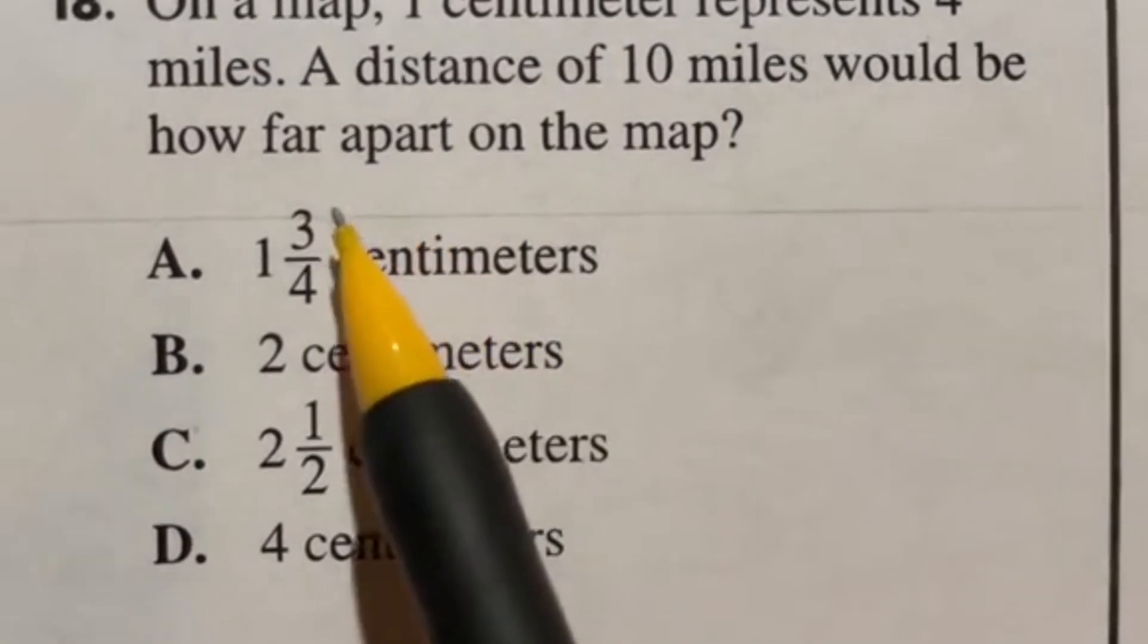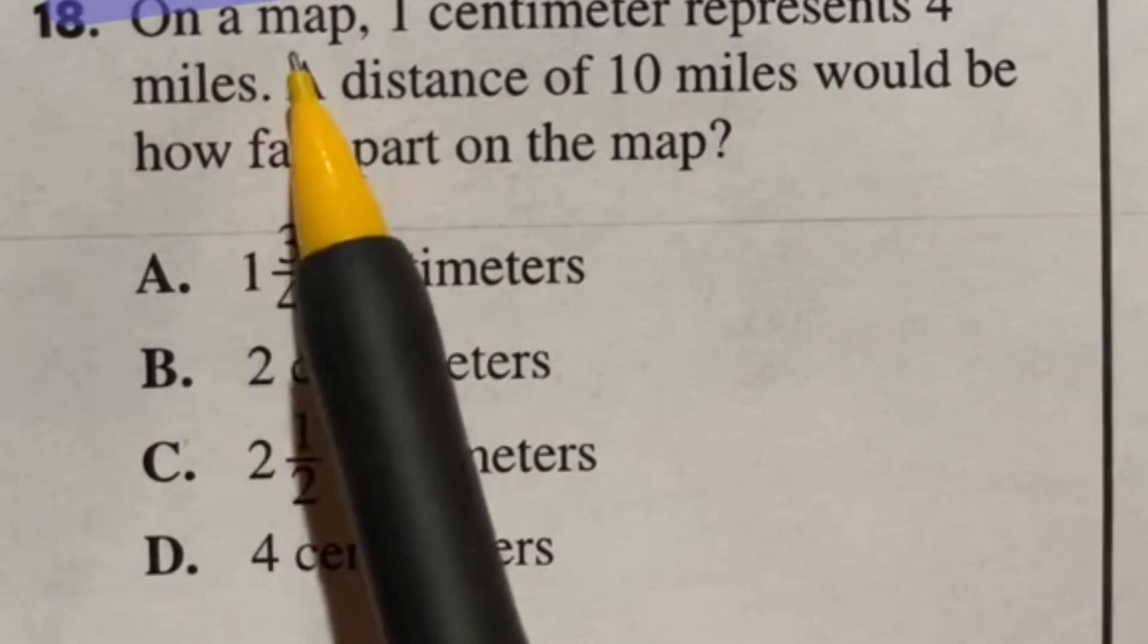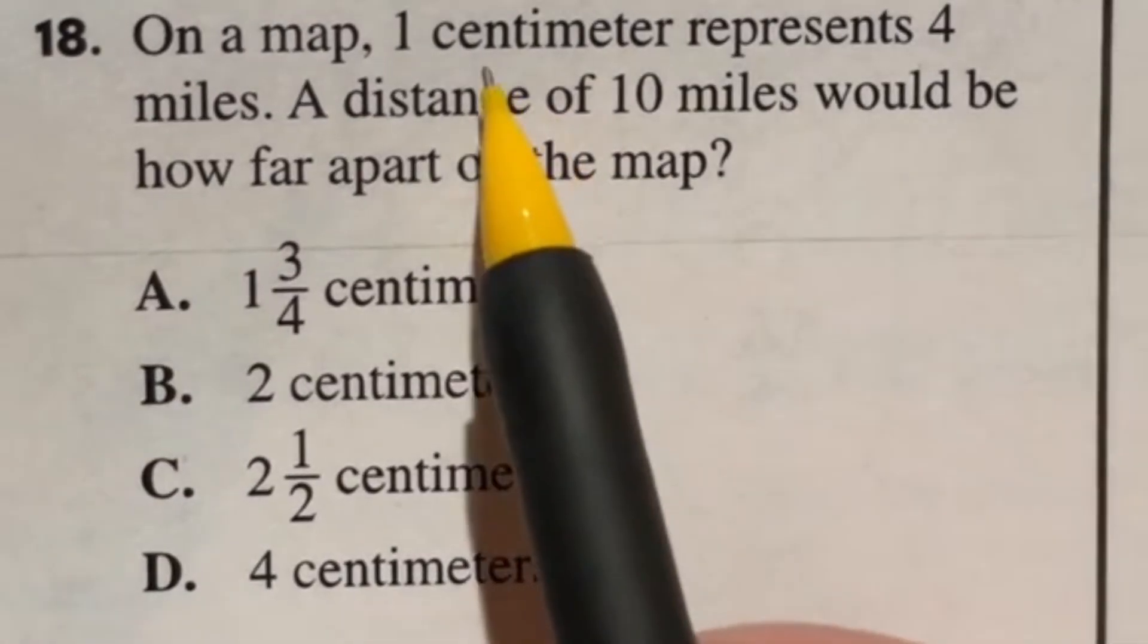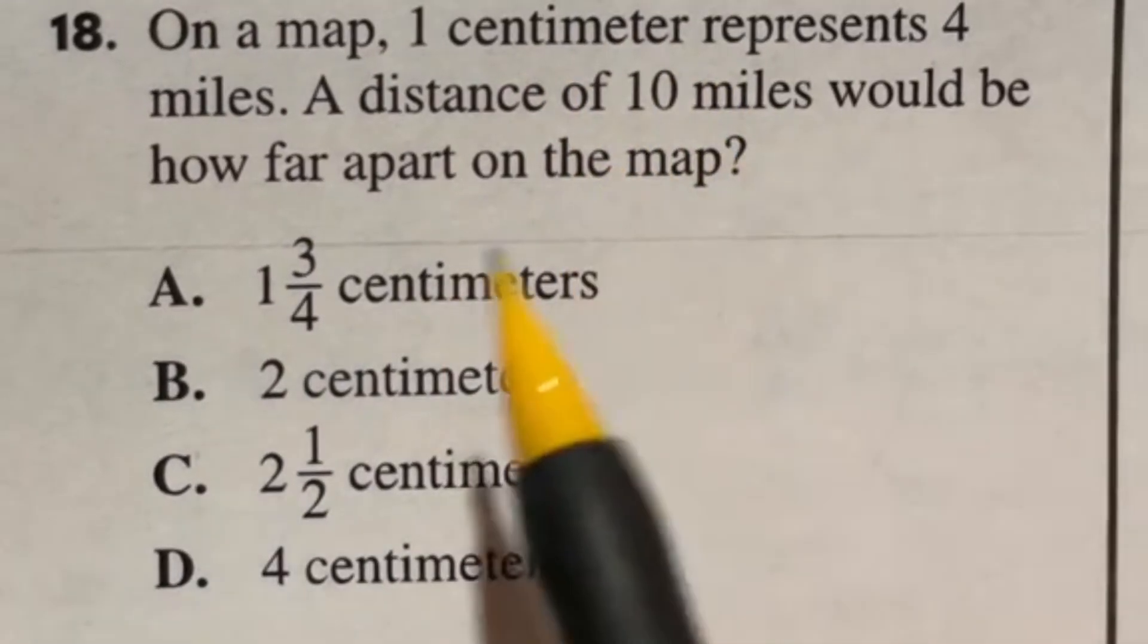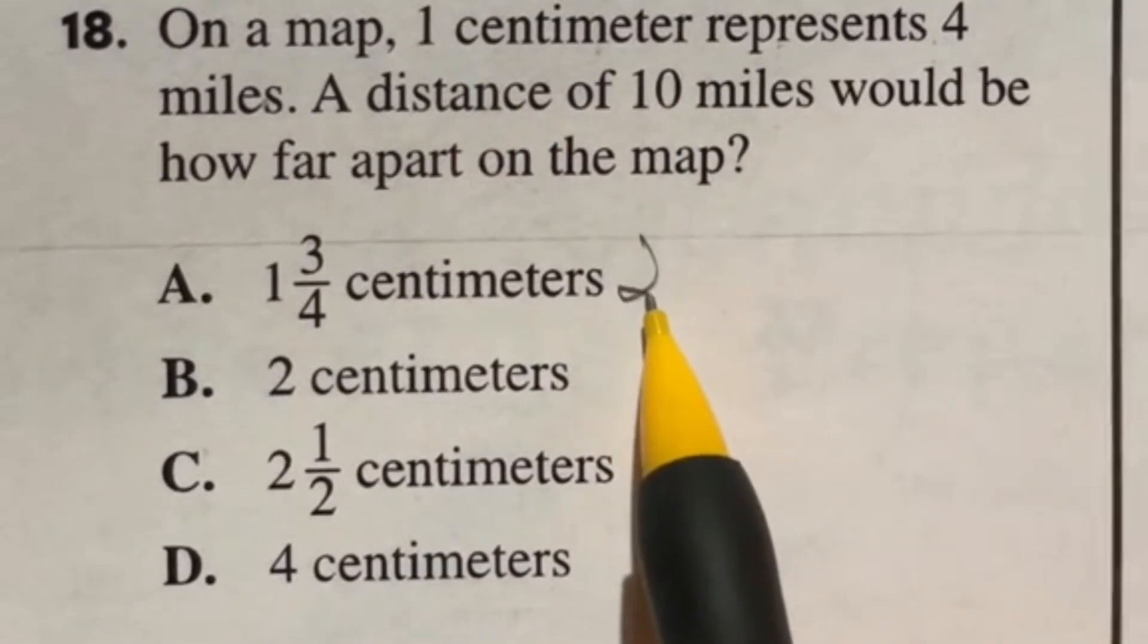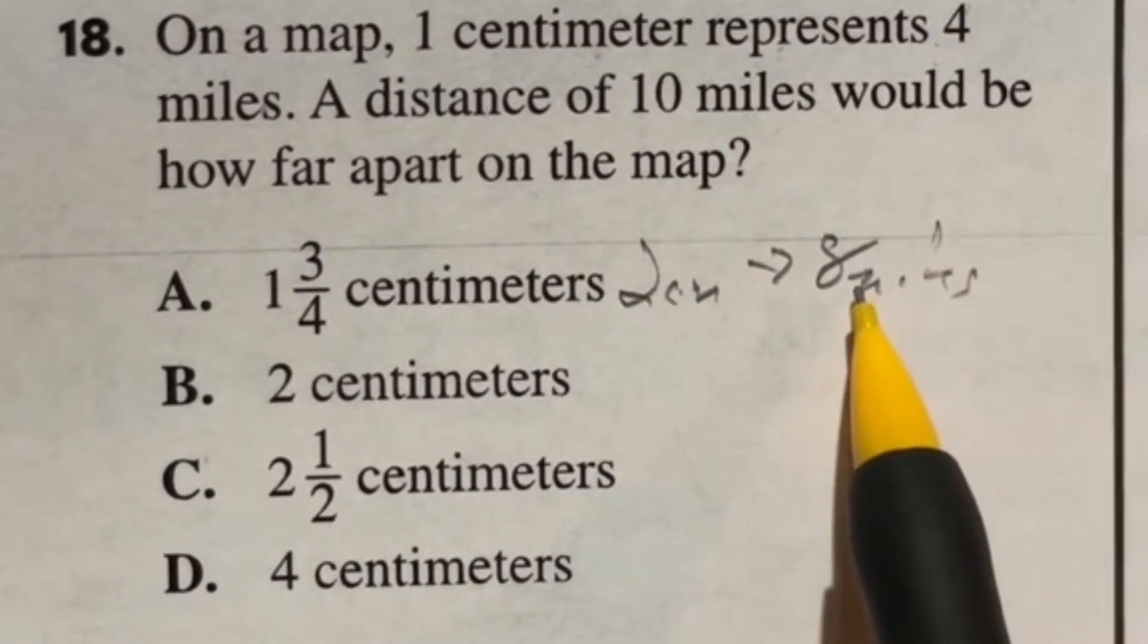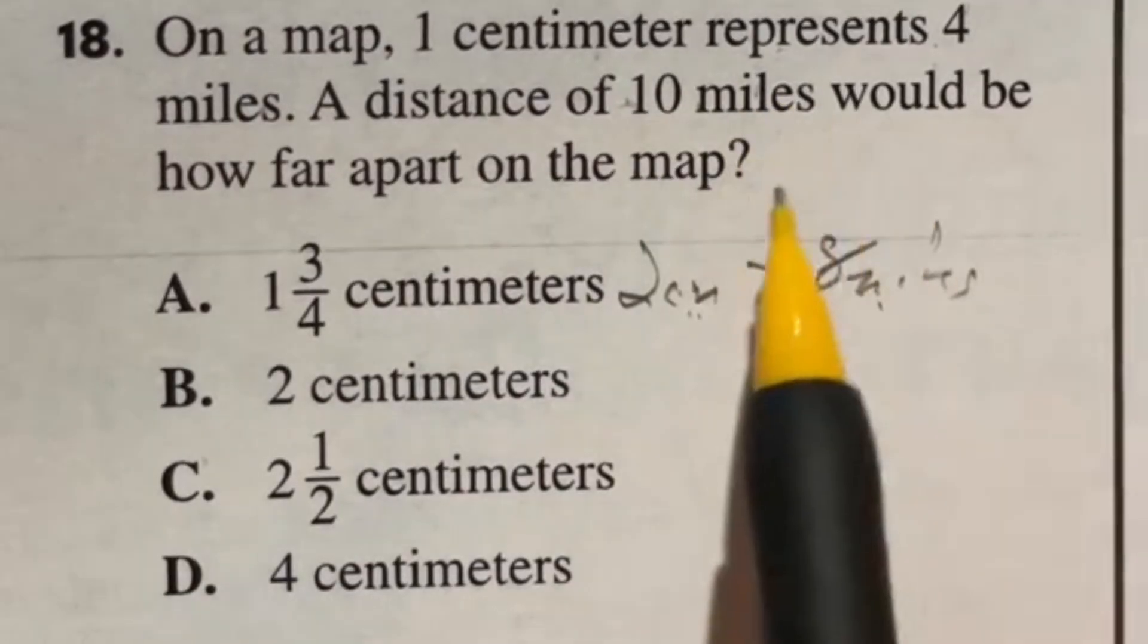Number 18 is an easy one. It says on a map, one centimeter represents four miles, a distance of 10 miles would be how far apart on the map. So this is essentially just figuring out like a ratios game. Now you could do it directly doing all the mathematical things. But let's just use some logical reasoning here. Okay. So one centimeter represents four miles. So that means that two centimeters would represent eight miles. How? Because well, one times two gives us the two and four times two gives us the eight. So right off the bat, I know that it's going to be more than two because 10 is more than eight.